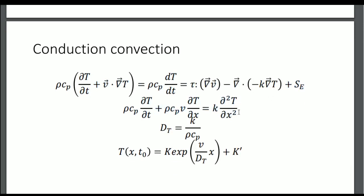With those terms neglected, we get the general equation. To solve it, we can split the variables of time and space, getting a solution in exponential form — including a decreasing exponential in t. A key coefficient appears: k over rho times the heat capacity, which represents the thermal diffusivity dt, homogeneous to square meters per second, present in diffusion equations.